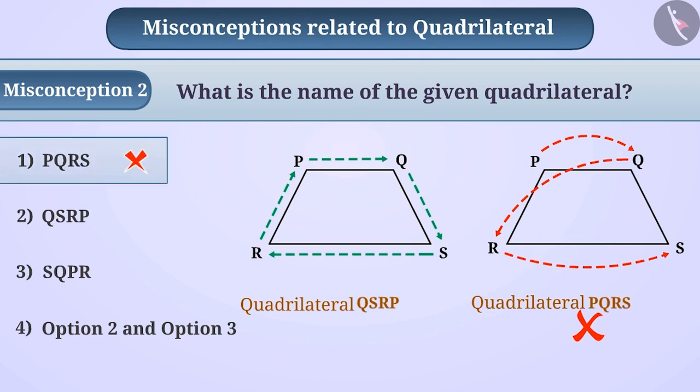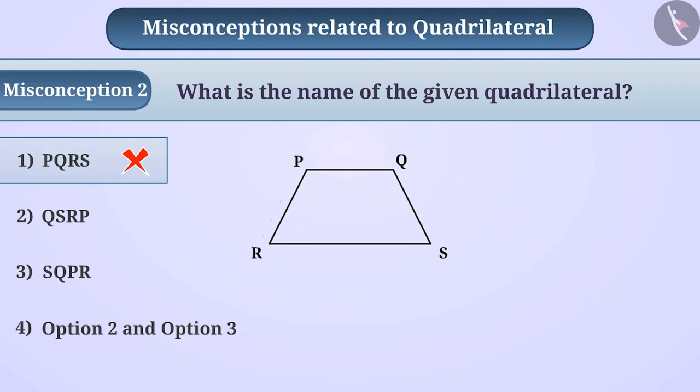Hence, option 1 is the incorrect answer to the given question. Some children understand that to name a quadrilateral, it starts from the point on the left of the quadrilateral, not from the point on the right.